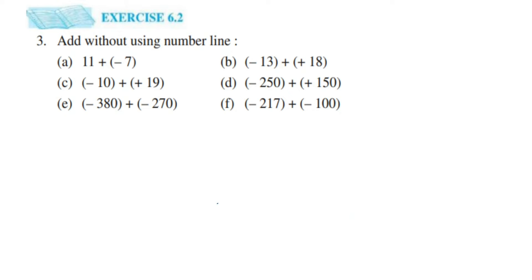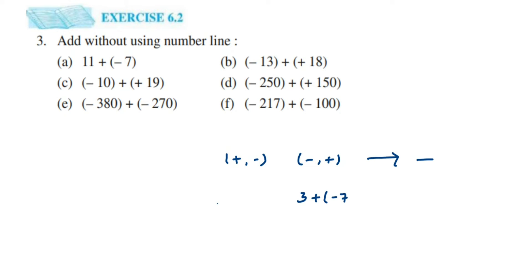Now, what happens if the two integers are of opposite or different signs? Suppose we have a plus and a minus, or vice versa. Whenever you have two different signs, you have to always subtract the numbers. After subtracting, whichever number is greater — not which integer, but which number — you put that sign.